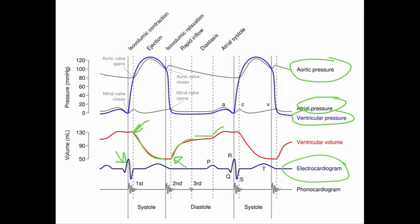If you look at the ventricular pressure, depending on the phase of the cardiac cycle, at the beginning of systole when the QRS shows the ventricle starts contracting, the ventricular pressure goes up — even though the volume doesn't change during isovolumic contraction — until the ventricular pressure exceeds systemic pressures. That's when the aortic valve opens. Here you can see the ventricular pressure in blue and the aortic pressure in gray: the ventricular pressure is higher than the aortic pressure, which is what you need for blood to eject.